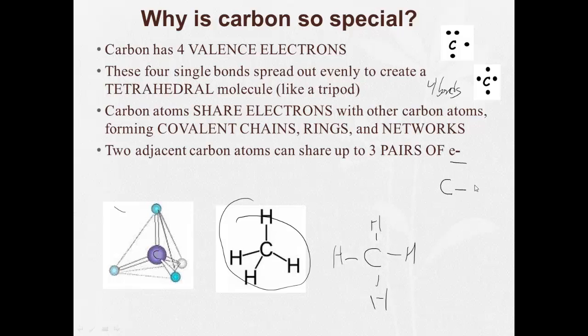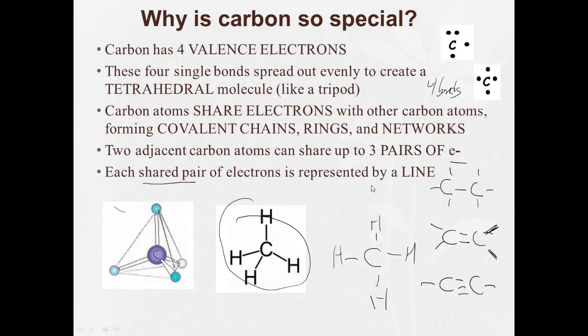So you can have carbon sharing one like this, and then they each have room for three more bonds. You can have them sharing two pairs of electrons, giving them each room for two more bonds. Or they can share one, two, three pairs of electrons, giving each room for one more bond. Remember that each shared pair of electrons is represented by a line, so this represents a shared pair. This represents two shared pairs. This represents three shared pairs. So single bond, double bond, triple bond.